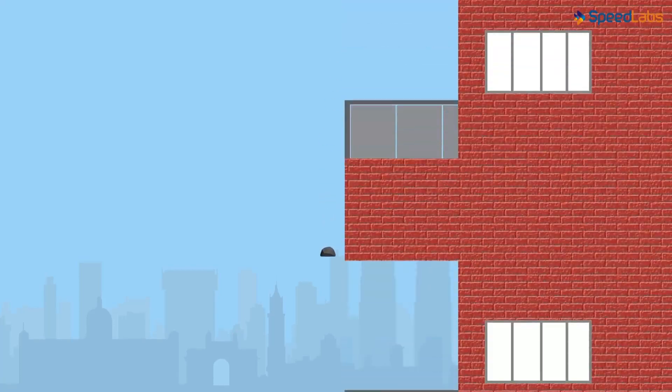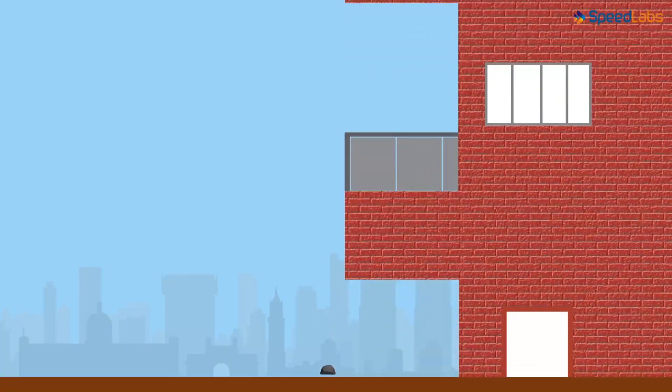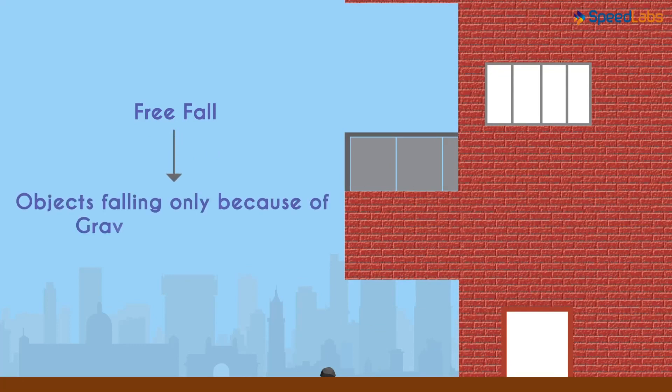When you drop a stone from your hand, it falls to the ground. It's an example of free fall. Whenever objects fall towards the earth under this force alone, we can say that the objects are in free fall.